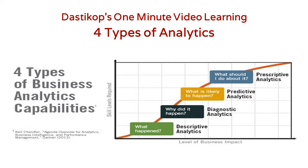The third one is called predictive analytics, in which given that I have historical data and I also know the reason why it has happened, can I predict the future? If I am using analytics for that, it's called predictive analytics, and the key question is: what is likely to happen?